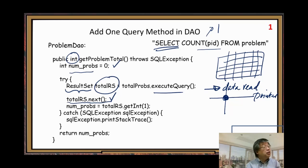totalRS dot getInteger. Because this is an integer, so getInteger. This one corresponds to the first column. First field. If you have second field, you want to read the data from second field, then parenthesis two, and so on. Here, we only have one column. So we only have one. So you put one. Then, this should contain the correct number. Then, this method returns that number. So we are done. So that's all we need to do in this query method.